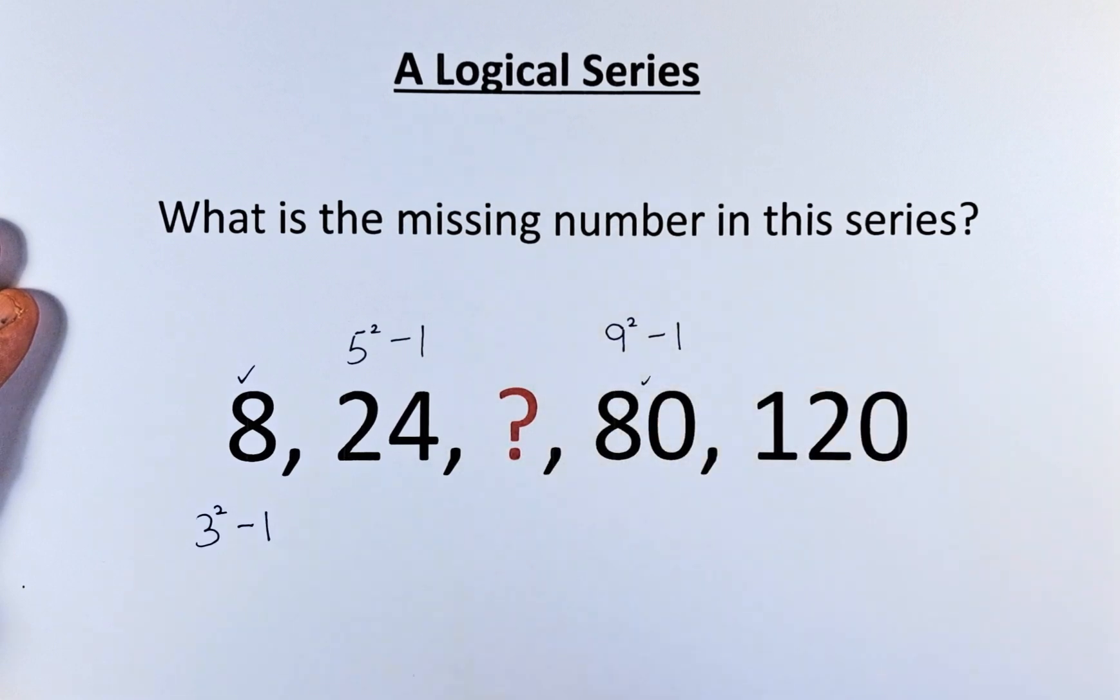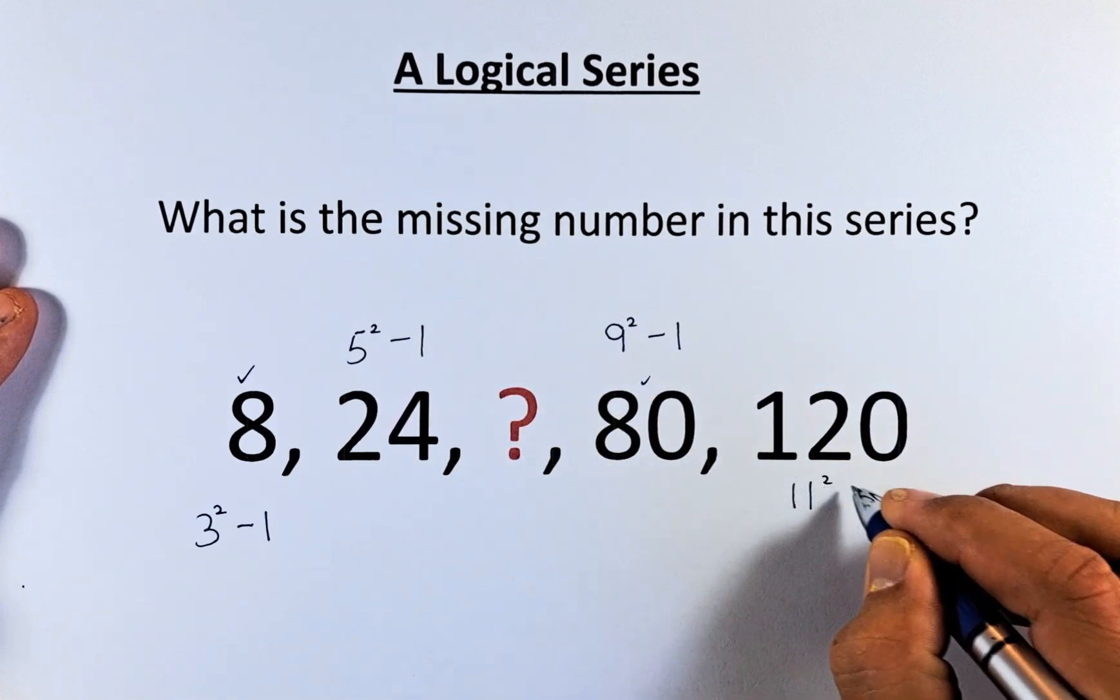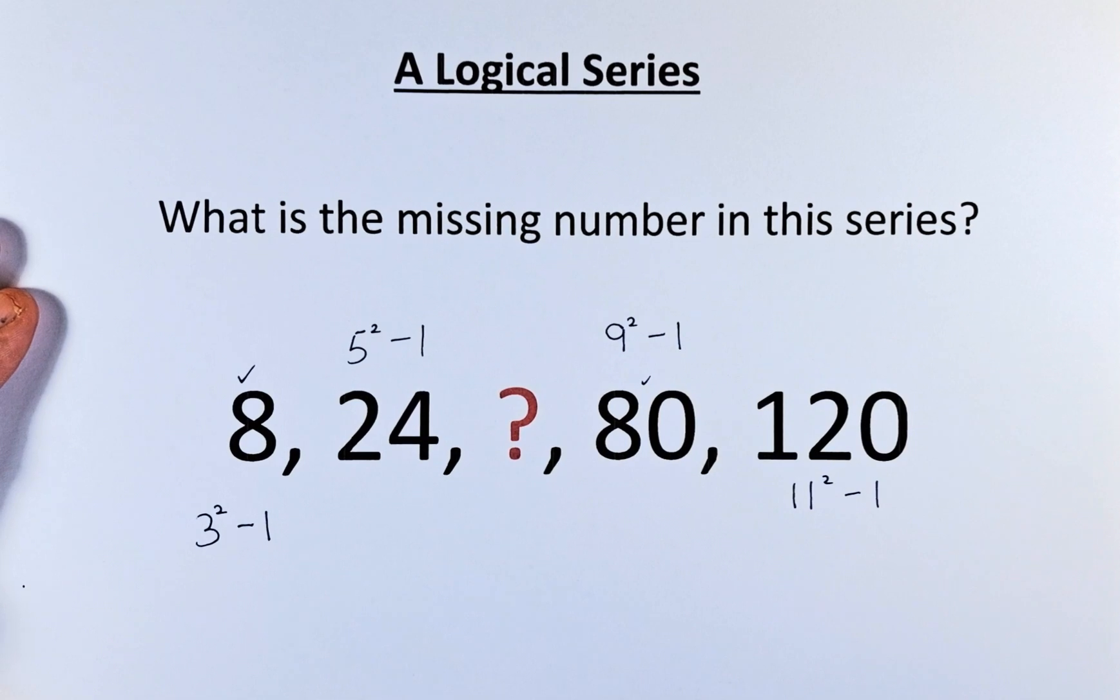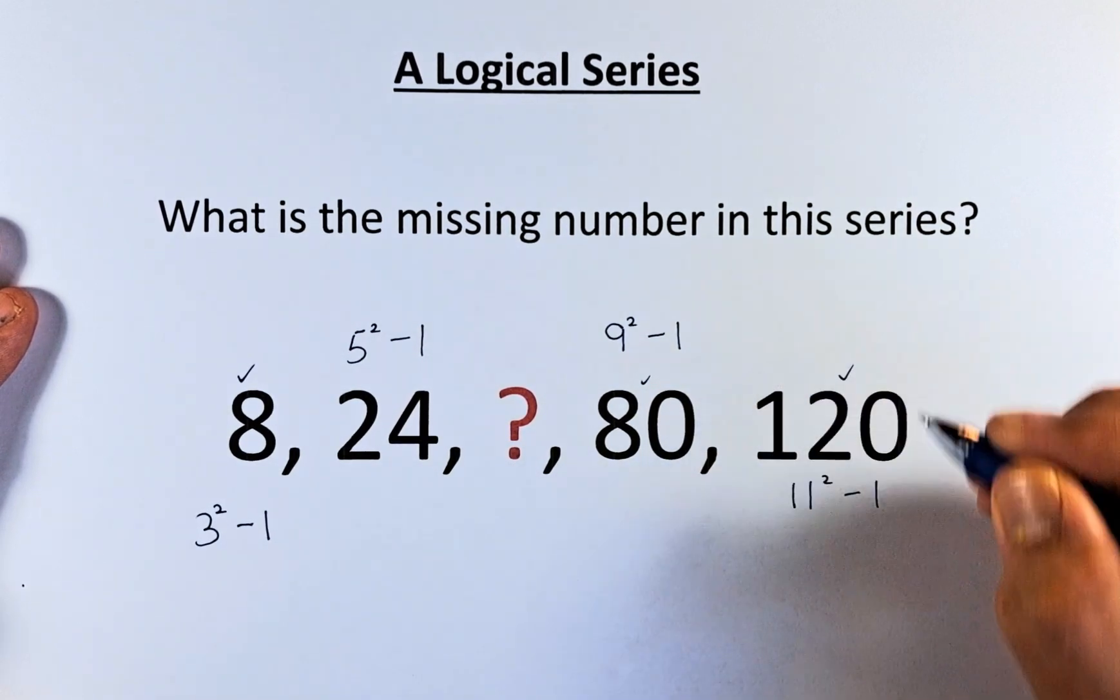And then, how about 120? 120 is 11 squared minus 1, because 11 squared is going to be 121 minus 1, that gives us 120.